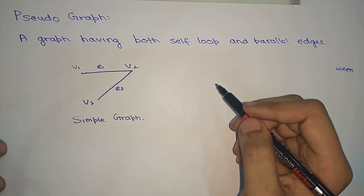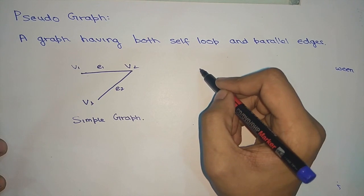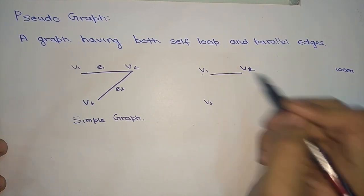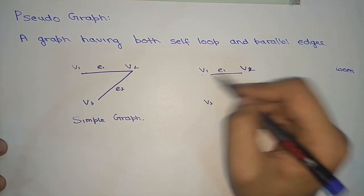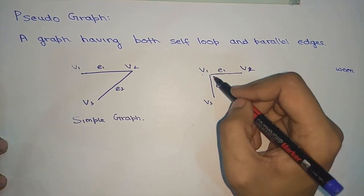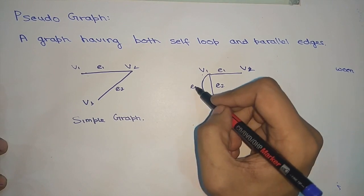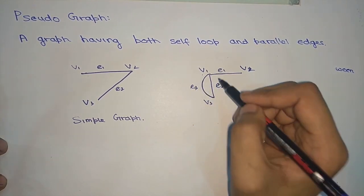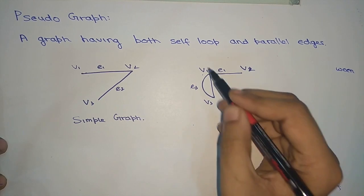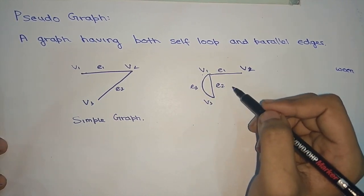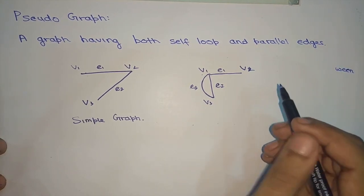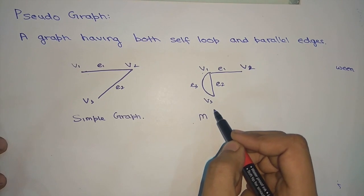For a multi-graph example: suppose we are given three vertices V1, V2, and V3. In addition, there exists an edge E3 between V1 and V3 as well. So E2 and E3 have the same endpoints — V1 and V3 — making E2 and E3 parallel edges. Since this graph contains parallel edges but no self loops, it is known as a multi-graph.